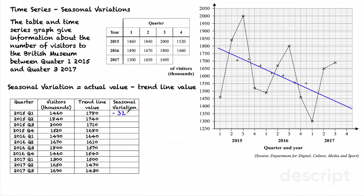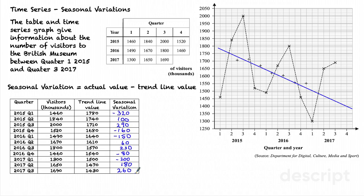Don't worry that that's a negative number. What we're finding is the distance between the trend line and the original data point, and below the trend line is going to be a negative value. I do that subtraction: 1840 minus 1740, and here we have a positive value of 100 — that shows me that I'm above the trend line. Moving on, I do the same subtraction; here I have 290, showing me that I'm 290 above the trend line. The final value is 1690 minus 1430, which is 260, meaning I am 260 above my trend line.